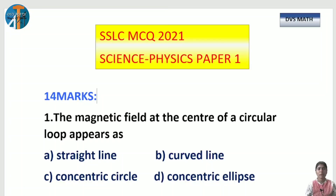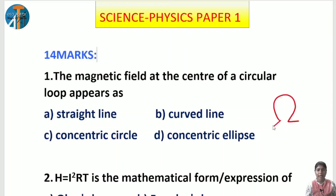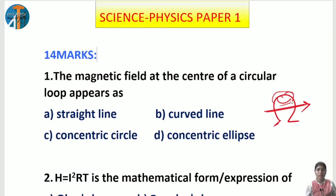The first question is: the magnetic field at the center of a circular loop appears as — select the correct option. As you all know, when we consider a loop, the magnetic field when it comes at the center is always in the form of straight lines. You can observe this in your textbook.